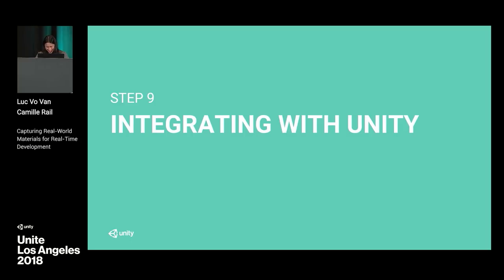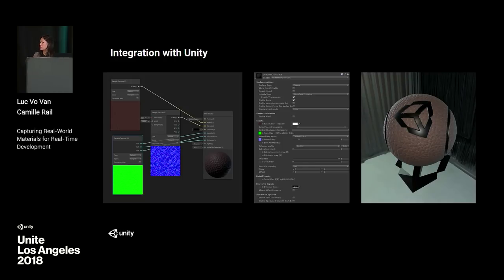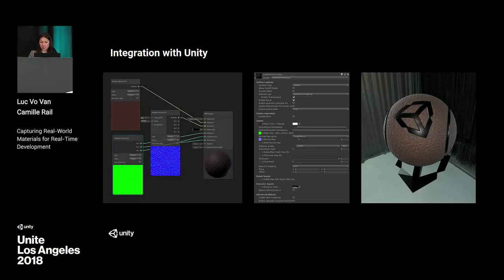We're almost done. I skipped the part where I use null to generate the remaining textures because it's a simple step. Since I'm integrating into Unity and using the HD render pipeline, I'm using a mask map. A mask map contains a metallic map, ambient occlusion map, detail map, and smoothness map. I've generated all of these and created a mask map out of them. On the left you have shader graph, in the middle the Lit shader. Since you have your base color, normal, and the other maps generated, you just plug them in — and automatically you'd have your new material in Unity created using your real-life sample.